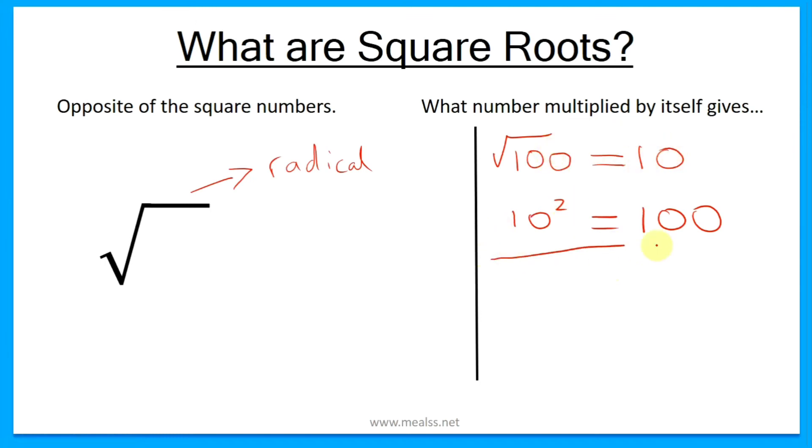It's like working backwards. Another one. Let's do the square root of 49. Ask yourself the question: what number multiplied by itself gives 49? And the answer for that one is 7, because 7 squared equals 49.